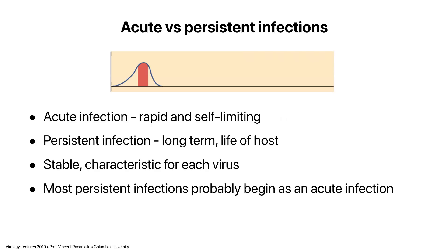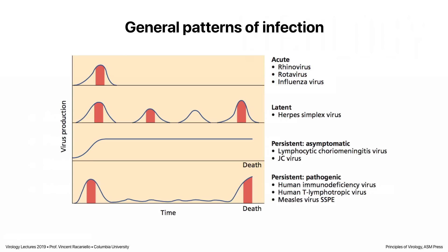Just to remind you, last time we talked about acute infections, which are rapid and self-limiting. Today: persistent infections — long-term, essentially the life of the host. They are stable, they don't change through the course of infection, and they're characteristic for each virus.